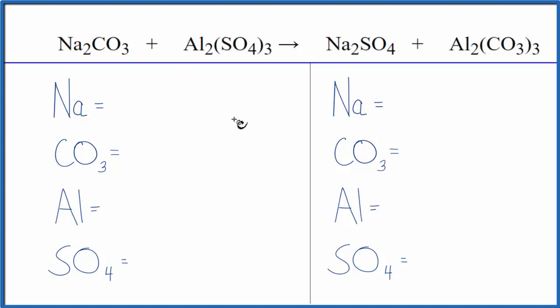We can use a trick to make this a lot easier. This is kind of intimidating looking. Let's try it. We have two sodium atoms, and here's the trick: CO3, the carbonate. We have it here, and then we have it again over here. It stays together in the chemical reaction. We can just count it as one thing. We have one carbonate.